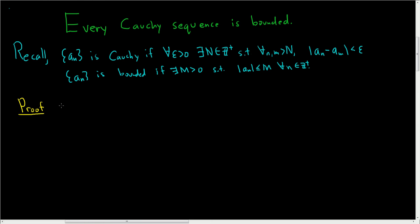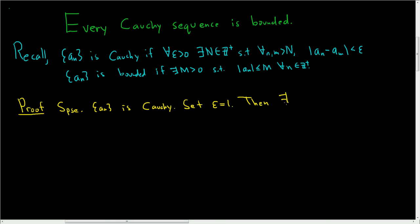We'll start by assuming we have a Cauchy sequence. Suppose a_n is Cauchy. If it's Cauchy, we have this definition: for all epsilon greater than 0, there is a positive integer such that all of this is true. Let's pick epsilon equal to 1 — it doesn't really matter, as you'll see when we finish the proof. Then by the definition of Cauchy, there exists a positive integer capital N such that for all little n and little m bigger than capital N, the distance between a_n and a_m is less than 1.